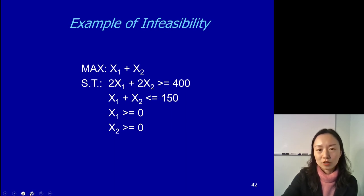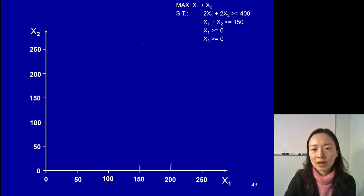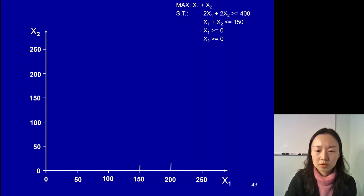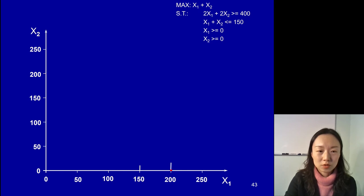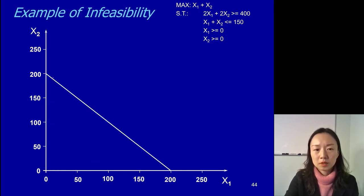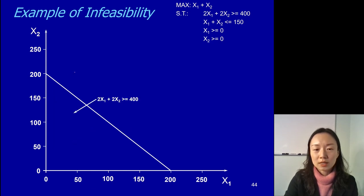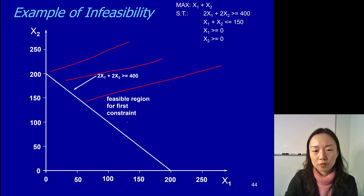Once you are done, let's check it together. We have 2x1 plus 2x2 greater than or equal to 400. When we set x1 to 0, x2 will be 200; when we set x2 to 0, x1 will be 200. So we get this first line. And because it's a greater-than-or-equal-to constraint and the x2 coefficient on the vertical axis is positive, we shade the area above it — that's the feasible region for this first constraint.